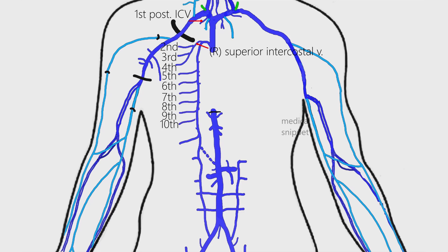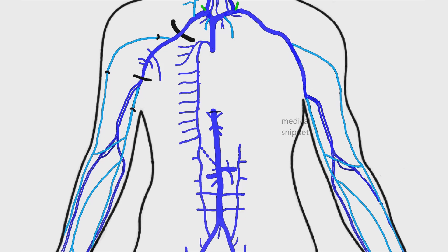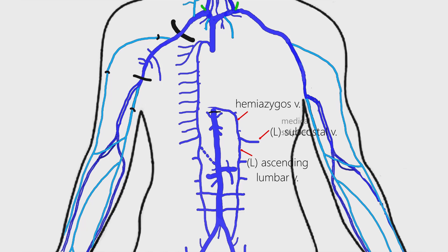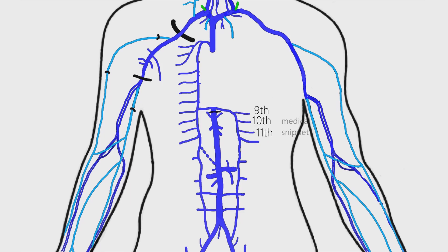The rest of the posterior intercostal veins drain separately into the azygos vein. The left subcostal vein unites with the left ascending lumbar vein to form the hemi-azygos vein. The hemi-azygos vein enters the thorax and drains into the azygos vein at the level of T8 vertebra. The hemi-azygos vein receives the lower three left posterior intercostal veins.